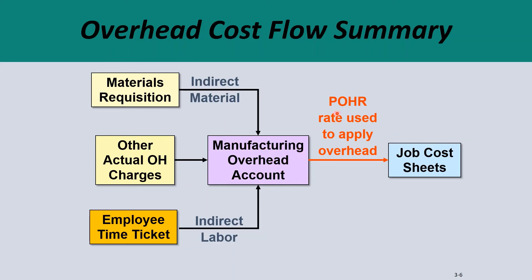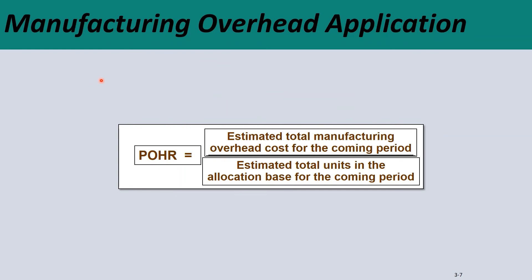From the manufacturing overhead account, we use a predetermined overhead rate to apply the overhead to the relevant job cost sheet. The predetermined overhead rate, or POHR, used to apply manufacturing overhead to job costs is calculated by taking the estimated total manufacturing overhead cost for the coming period — notice it is the estimated total — divided by the estimated total units in the allocation base for the coming period. The allocation base is usually some activity like labor hours, machine hours, or direct labor cost.